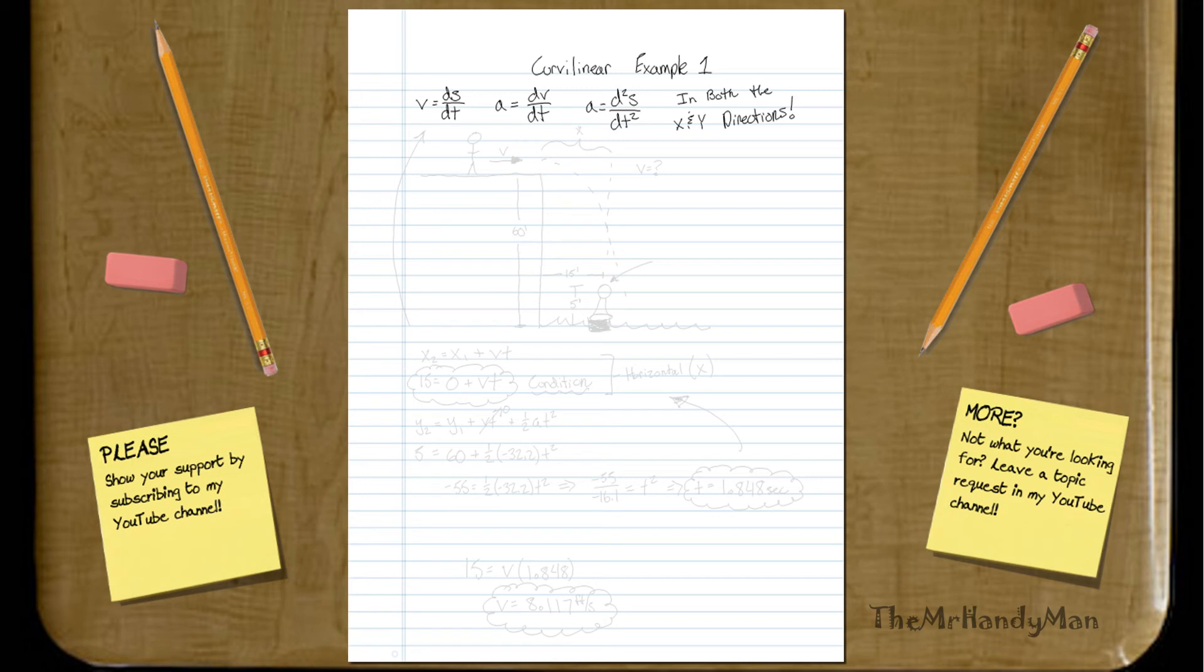Where we should start off is basically just reviewing what we learned in the rectilinear problems: v equals ds over dt, a equals dv over dt, and a is also the second derivative of s over dt squared.